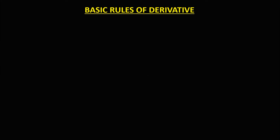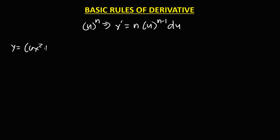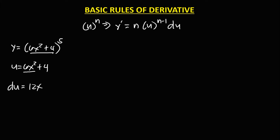For the general power rule or chain rule: if we have u to the power n, the derivative is n times u to the power n minus 1, times the derivative of u. For y equals 6x squared plus 4 to the power 5, the derivative of u — since the derivative of 6x squared is 12x, and the constant 4 gives 0 — so du equals 12x.